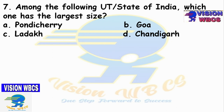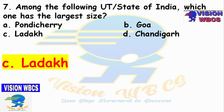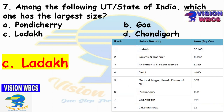Seventh question: Among the following Union Territories or States of India, which one has the largest size? Option A — Pondicherry. Option B — Goa. Option C — Ladakh. Option D — Chandigarh. The right answer is Option C: Ladakh, with an area of 59,146 km². The ranking goes: Ladakh, Jammu & Kashmir, Andaman & Nicobar, Delhi, Dadar Nagar & Daman & Diu, Puducherry, Chandigarh, and the smallest is Lakshadweep at 32 km².